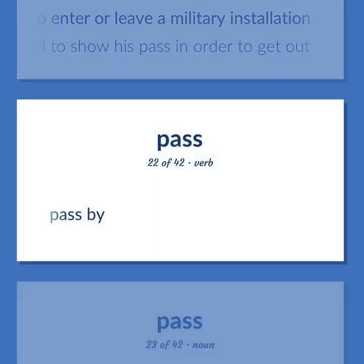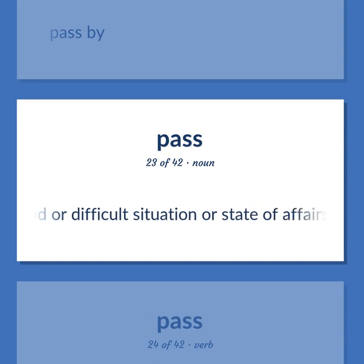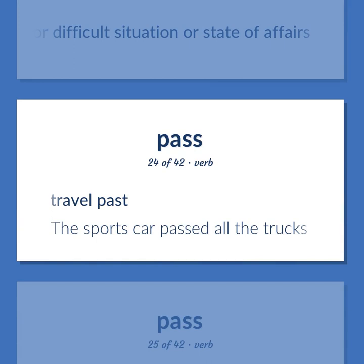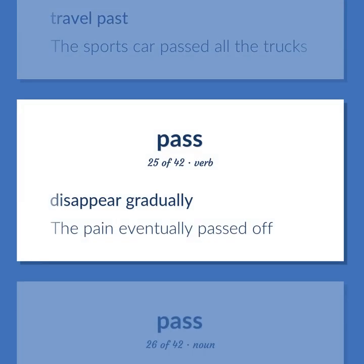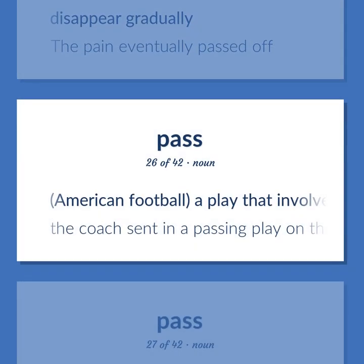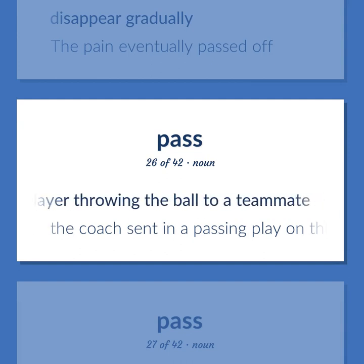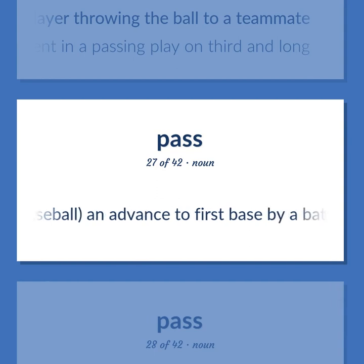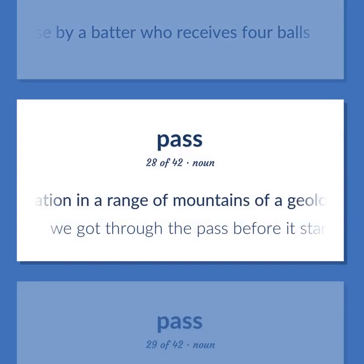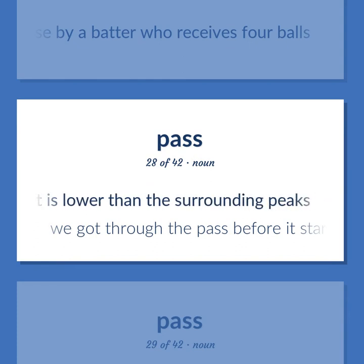Pass by. A bad or difficult situation or state of affairs. Travel past — the sports car passed all the trucks. Disappear gradually — the pain eventually passed off. American football: a play that involves one player throwing the ball to a teammate — the coach sent in a passing play on third and long. Baseball: an advance to first base by a batter who receives four balls. The location in a range of mountains of a geological formation that is lower than the surrounding peaks — we got through the pass before it started to snow.